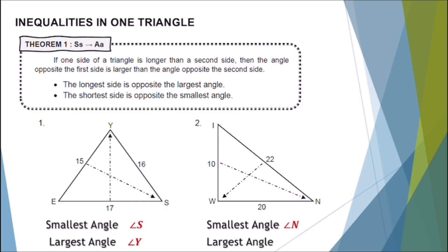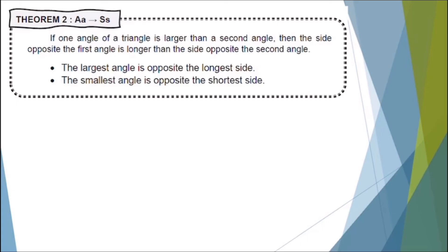For our largest angle, the longest side measures 22, and the opposite angle to it is angle W. Therefore, our largest angle is angle W. Now let's proceed to Theorem 2: If one angle of a triangle is larger than a second angle, then the side opposite the first angle is longer than the side opposite the second angle. The largest angle is opposite the longest side, and the smallest angle is opposite the shortest side.